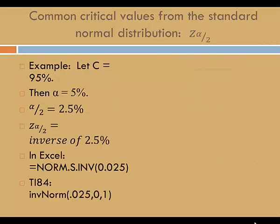From the empirical rule, we know that the critical value that corresponds to 95% confidence is 2. Let's find the critical value using the alpha over 2 method. Let c equal 95%. Then alpha is the complement of c, in other words, 5%.